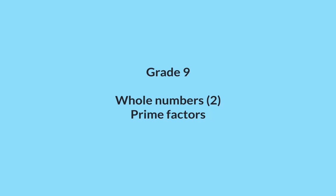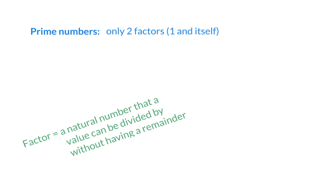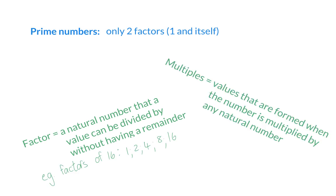In this video for whole numbers, we are going to have a look at prime factors and how we can use them. A prime number is a number that has only two factors: one and itself. A factor is a number that a value can be divided by without having a remainder — numbers that can divide exactly into the number. Multiples are the values formed when a number is multiplied by any natural number.